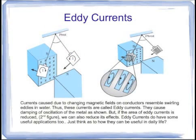The last topic of today's presentation is eddy currents. The currents caused due to a changing magnetic field — that is the electromotive force — flow in a direction similar to that of a swirling eddy in water or a river; thus we call these currents eddy currents. As shown in the figure, when we allow a copper plate to oscillate in a magnetic field, eddy currents are caused and the oscillating plate gets damped. These eddy currents can be reduced by slotting the copper plate to create a slotted rectangle, so that the area of eddy currents gets reduced.